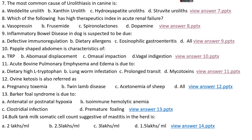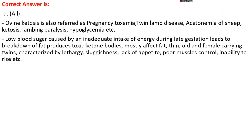Question number 12. Ovine ketosis is also referred to as: options A, pregnancy toxemia; options B, twin lamb disease; option C, acetonemia of sheep; options D, all. The right answer is option D, all. Ovine ketosis is also referred to as pregnancy toxemia, twin lamb disease, acetonemia of sheep, ketosis, lambing paralysis, and hypoglycemia. Low blood sugar due to inadequate energy intake during late gestation leads to breakdown of fat, producing toxic ketone bodies. It mostly affects fat, thin, old females carrying twins, characterized by lethargy, sluggishness, lack of appetite, poor muscle control, and inability to rise.